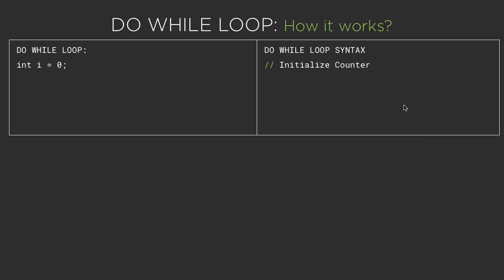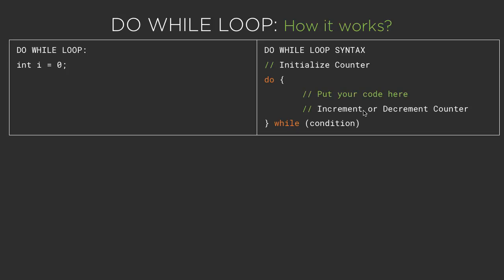Here on the right hand side, I will show you the syntax of the do-while loop, and on the left hand side I will show you the code snippet. Similar to the while loop, we simply initialize the counter outside the do-while loop. The syntax is: do something and then check the condition at the end. So in case of do-while loop, we first execute the code, then increment or decrement the counter, and at the very end we check the condition. So no matter what is our condition, our code is going to be executed at least once.